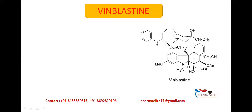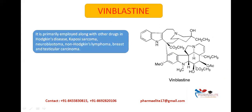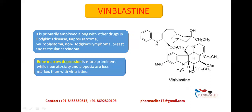The next drug is Vinblastine, which similarly has an indole ring, a dihydroindole ring, and a quinoline ring. It is mainly used along with other drugs in the treatment of Hodgkin's disease, Kaposi sarcoma, neuroblastoma, non-Hodgkin's lymphoma, breast cancer, and testicular carcinoma. The main adverse drug reaction of Vinblastine is bone marrow depression; neurotoxicity and alopecia are also present but less prominent. So while Vincristine's main toxicity is peripheral neuropathy, Vinblastine's main toxicity is bone marrow depression.